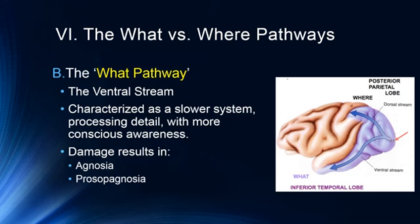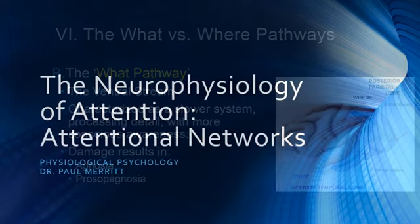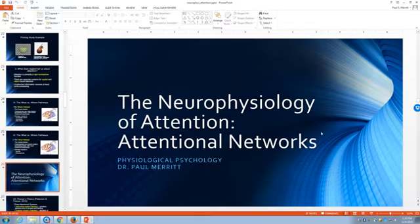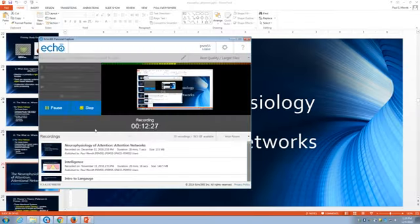The ventral stream is characterized as a slower system processing detail with more conscious awareness, and damage here can result in agnosia or prosopagnosia, which is face blindness. We will pick up in our next lecture on attentional networks right here. Thank you.